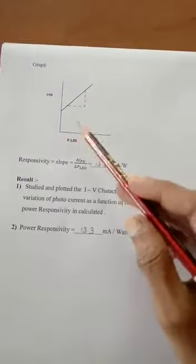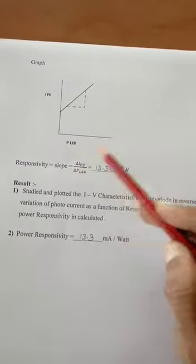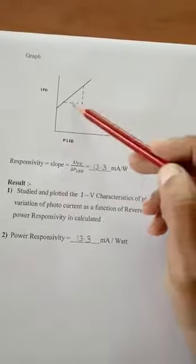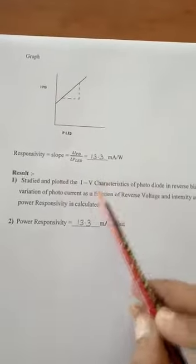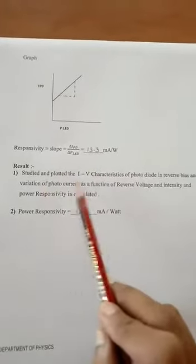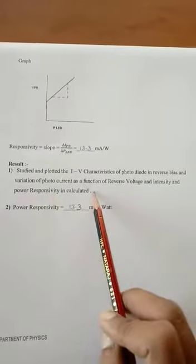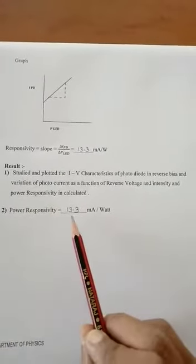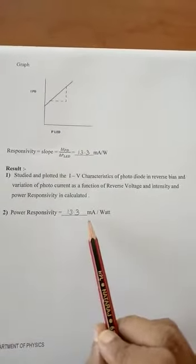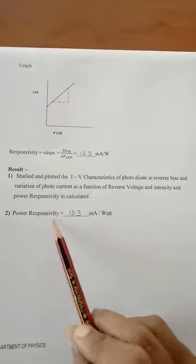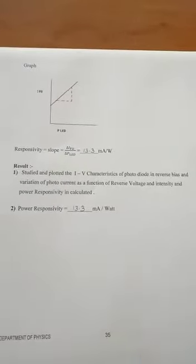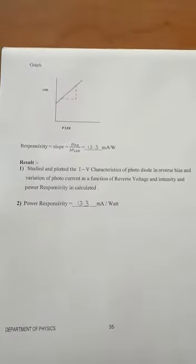P_LED is along the x-axis and I_PD is along the y-axis — the slope of it gives you the responsivity. The result: we studied the photodiode characteristics in a reverse bias condition and we have got the power responsivity as 13.3 milliamps per watt. This is the responsivity of the given photodiode. Thank you.